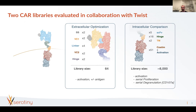We built two libraries evaluated with TWIST's manufacturing support. The first library was focused on the extracellular domain—specifically the SCFV and how it links to the CAR. This library had 64 different constructs where we varied the signal sequence, the identity of the first and second chain, the linker between those chains, and the hinge, while keeping the intracellular domain constant. We measured how well these binding regions activated cells in response to antigen presentation versus no antigen, filtering for SCFVs that were specifically responsive to antigen.